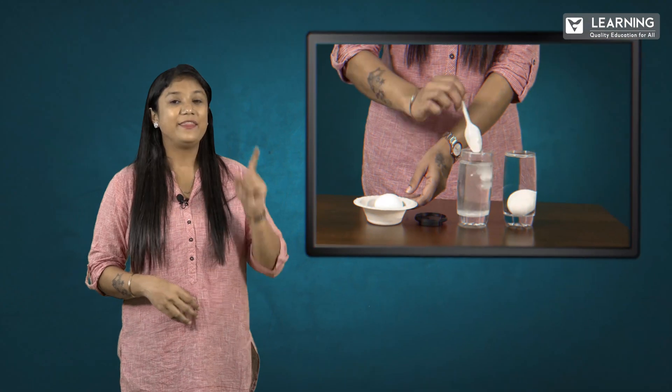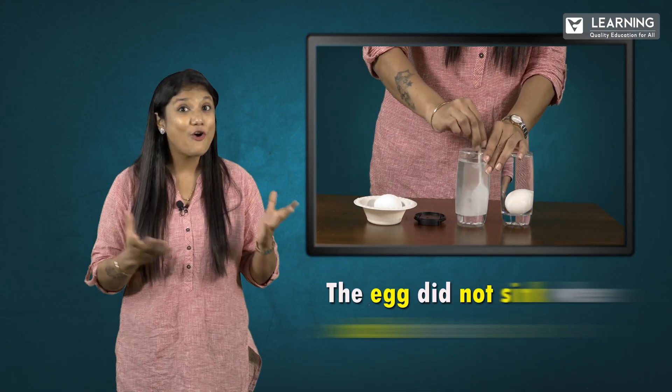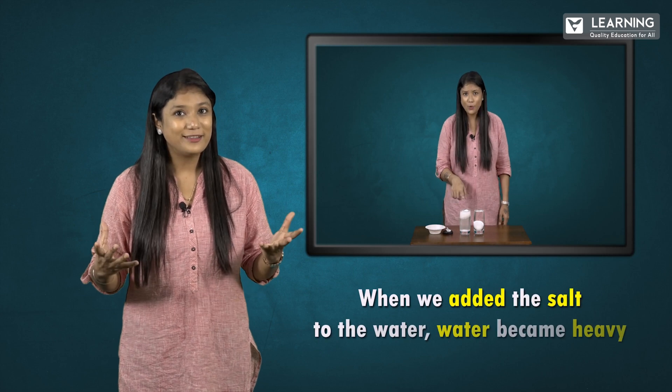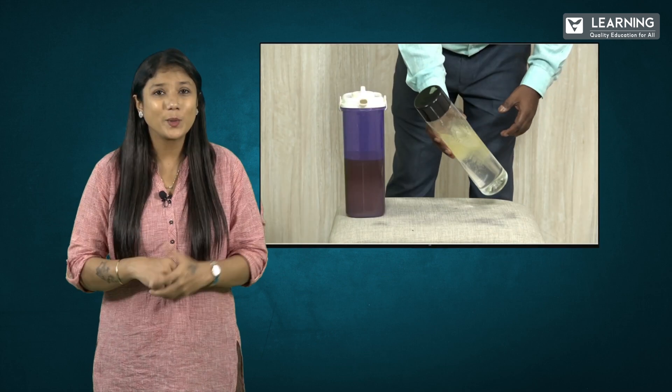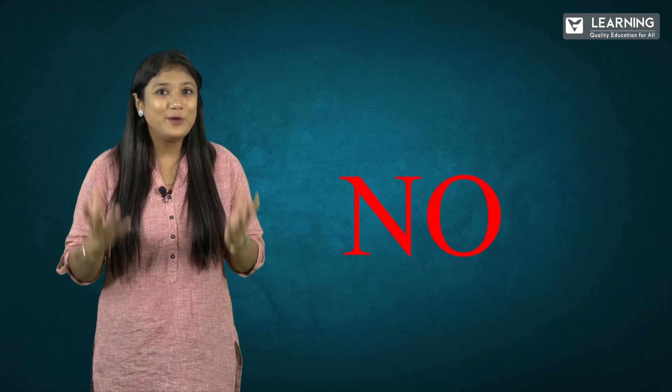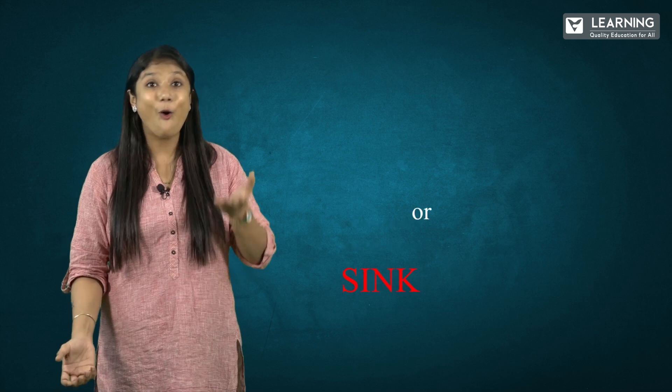Now let's rewind the experiments we did. In the first experiment, the egg did not sink when added to the salt water — why? Because when we added salt to the water, the water became heavy. In the second experiment, we added water and oil together and shook it — did they mix? No, because they had different densities. Do you see something similar between these two experiments?